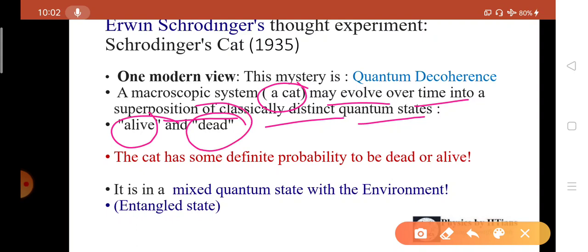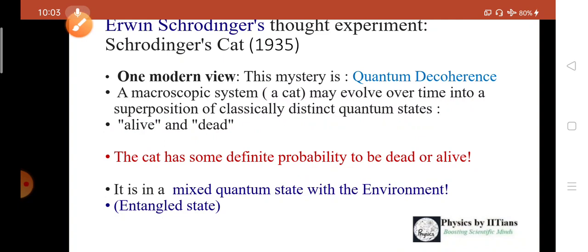What is the modern view? Actually, this mystery in the modern view is called quantum decoherence. Suppose a macroscopic system, we are taking it as a cat. It may evolve over time into a superposition of classically distinct quantum states: one is the alive quantum state, another is the dead quantum state. This means the cat has some definite probability to be dead or alive. Another way to think: it is a mixed quantum state with the environment, with the atoms or molecules surrounding the environment. One beautiful physical philosophy here in Veda: everything in our body is described by Agni, Vayu, Jal. We are all in a superposition state or entangled state with the environment, and this will decide the probabilistic outcome or measurement result of whether the cat is dead or alive.